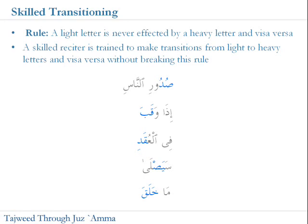The first example is 'Sudurinas'. The mistake people make is saying 'Sudur' — with the back of the tongue raised on the sad, they keep the tongue raised when they come into the dal, making the dal heavy. You have to quickly transition to a light letter, so it's 'Sudur' with a light dal. Another example is 'Idha Waqab' — the qaf is heavy and the ba is a light echo letter. Some people say 'Waqab' making the ba heavy, but it should be 'Waqab' with a light ba.